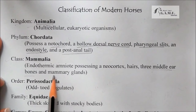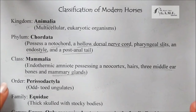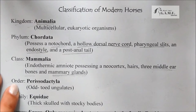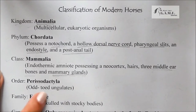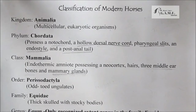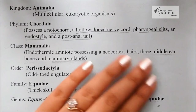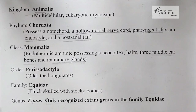Next we have Order Perissodactyla — we call them odd-toed ungulates. Next we have Family Equidae, characterized with stocky bones. Further we have the Genus Equus, the only recognized extant genus in the Family Equidae.